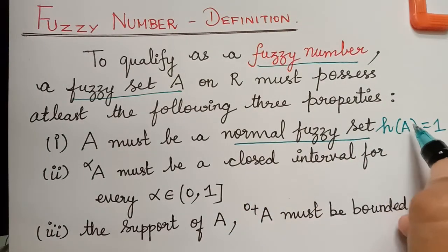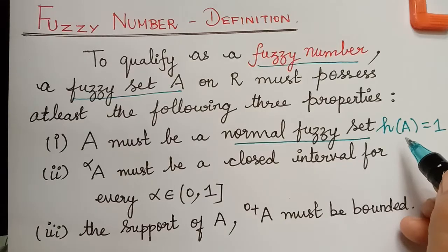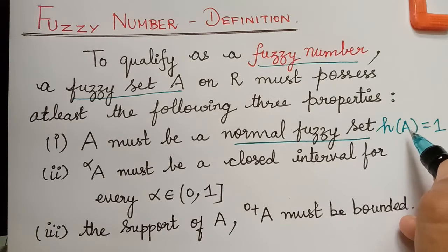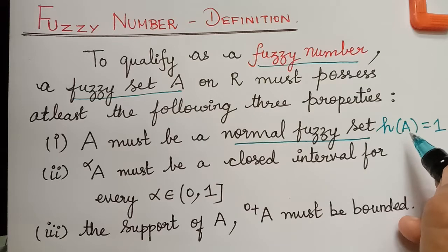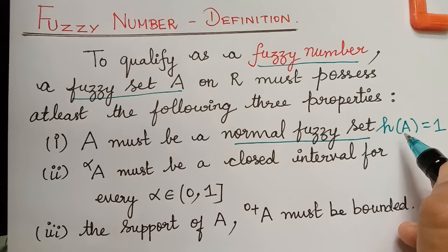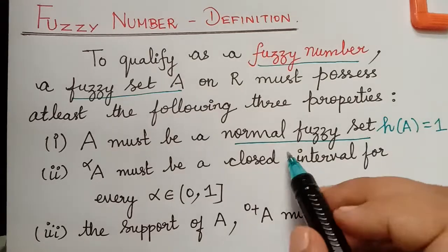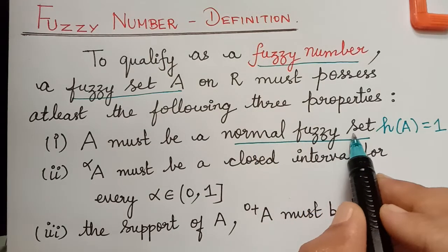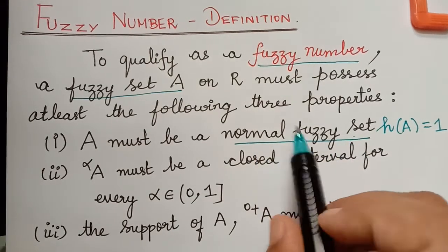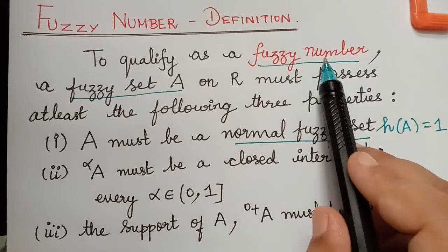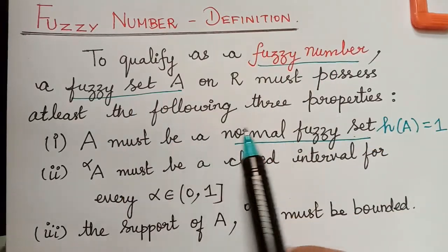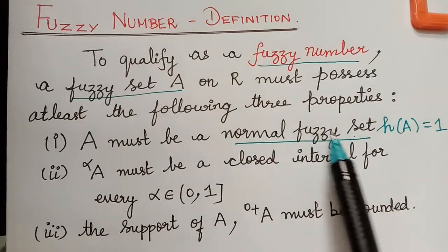The height of the fuzzy set is the maximum membership grade of that fuzzy set. We have to consider a fuzzy set and check the maximum membership grade, which will be the height of the fuzzy set. If that height is equal to 1, then the fuzzy set A is said to be a normal fuzzy set. So the first condition for a fuzzy set to be a fuzzy number is that it has to be a normal fuzzy set.